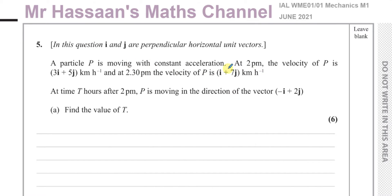So from this, you can work out the constant acceleration of this particle. Then it says, at time capital T hours after 2pm, P is moving in the direction of the vector minus i plus 2j. Find the value of T.